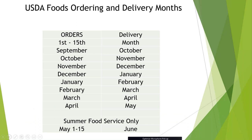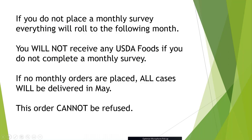When ordering USDA foods each month, the window is the 1st through the 15th. For example, the October monthly survey opens October 1st through the 15th, and those items will be delivered to you the following month in November. The same goes for November — orders placed November 1st through the 15th are delivered in December. Whatever month you are working on from the 1st to the 15th, always remember items come in the following month. If you do not place a monthly survey, everything will roll to the following month and you will not receive any USDA food.